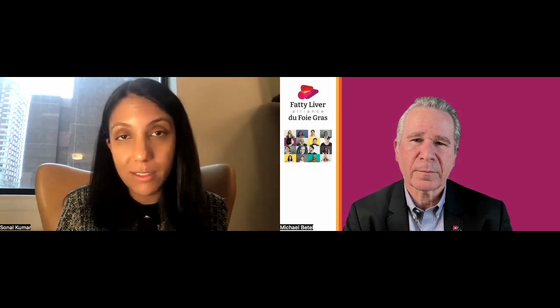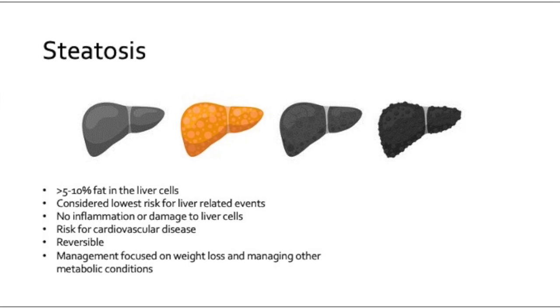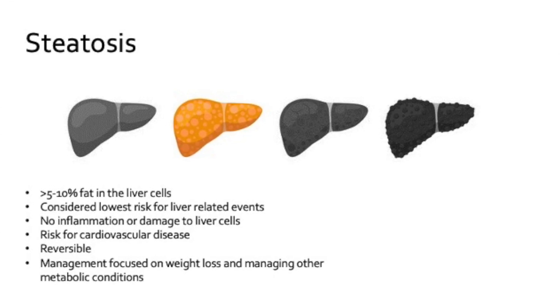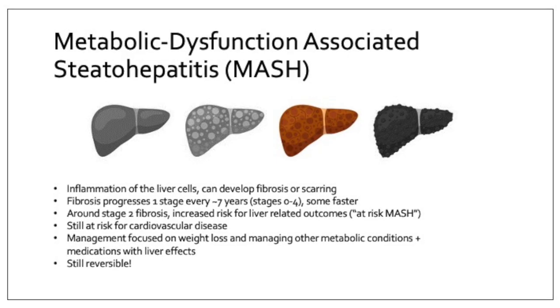The first stage, the first thing that happens, is that we develop fat in the liver. It's normal to have a little bit of fat in the liver, but when you have excess fat, that is steatosis — steatosis just means fat. When you have excess fat in the liver, it's steatotic liver disease, and that's where we get the name MASLD. When you have just fat in the liver, it doesn't cause any compromise to your liver function. But we think that about one in four patients with steatosis will progress to have inflammation in the liver — what we call steatohepatitis, or MASH: metabolic dysfunction associated steatohepatitis.